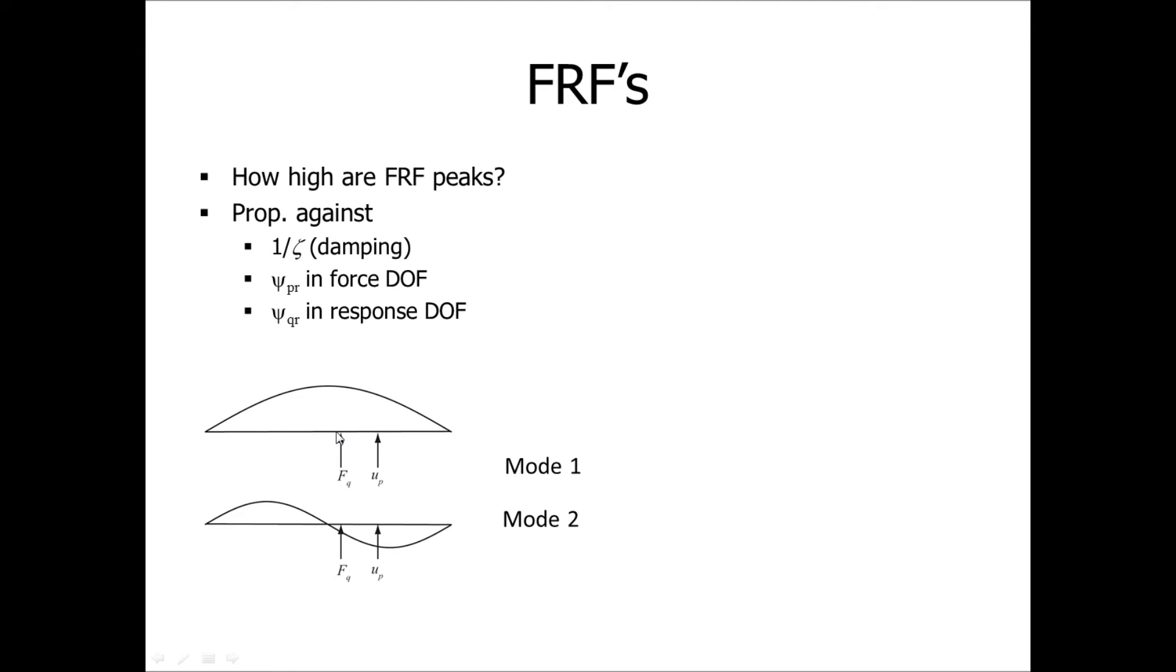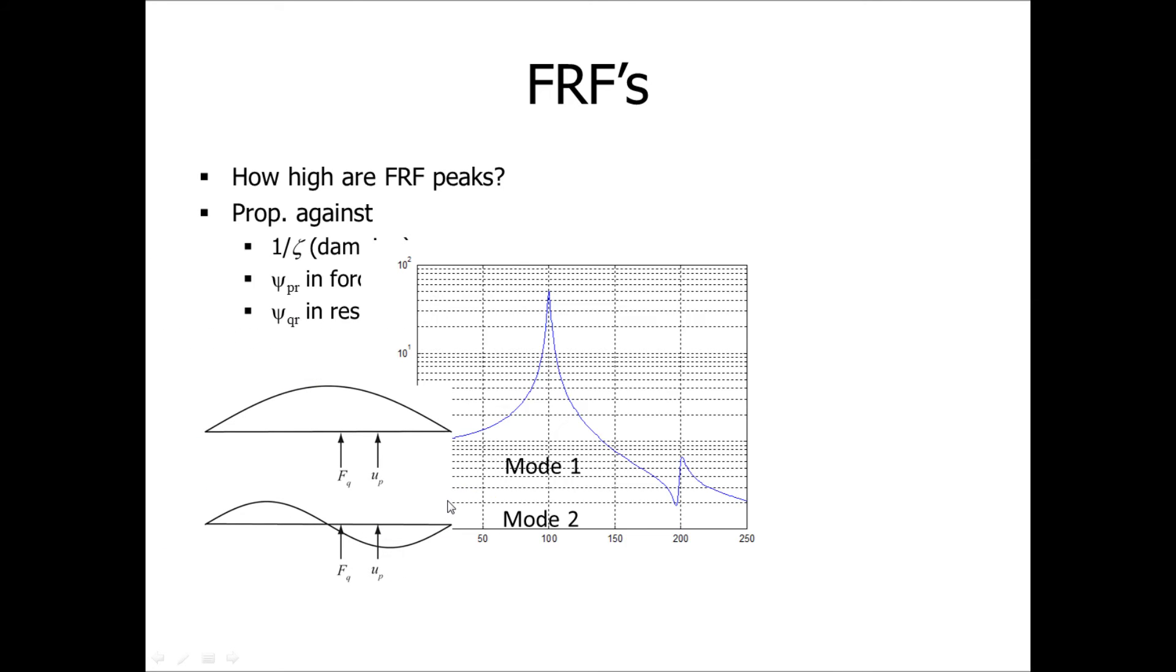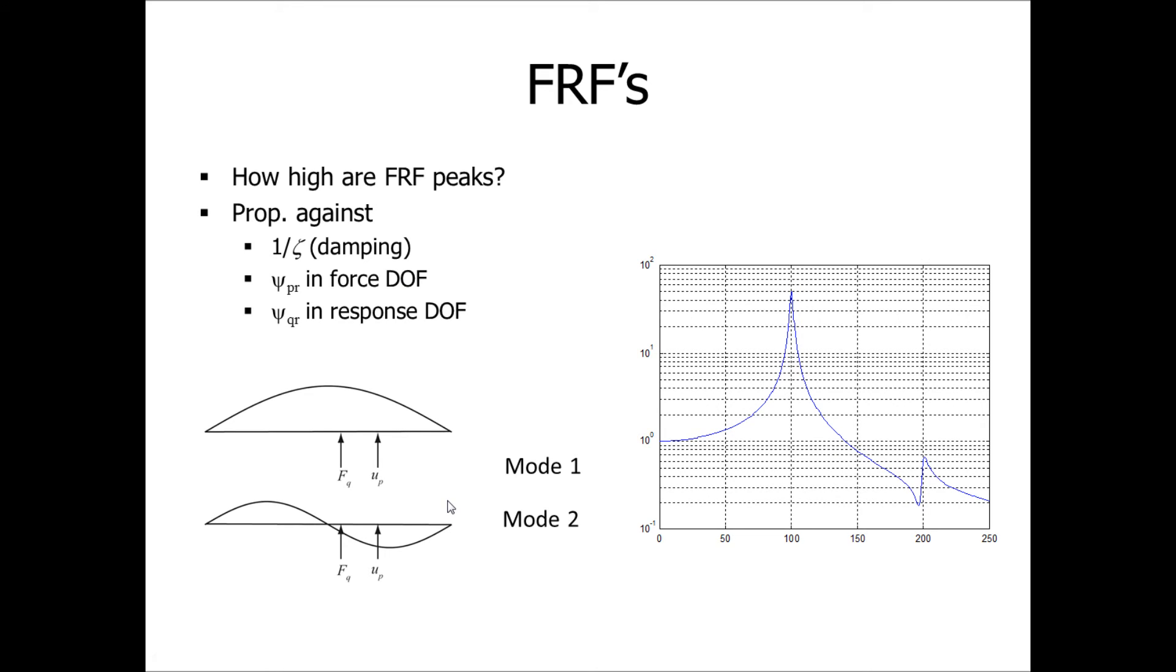Then for the first mode we have large mode shape coefficients, both psi QR and psi PR, whereas for the second mode we have a small mode shape coefficient, psi QR, because we are exciting the second mode close to its middle. This will mean that the first peak for the first mode is a high peak compared to the next peak, so the FRF will look like this.